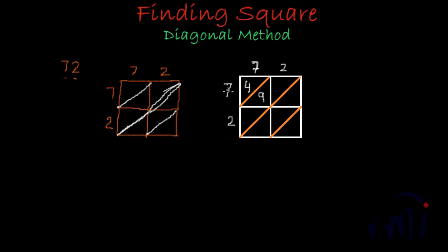Then we have seven times two is 14. 14 has four at units place and one at tens place. So the number at tens place I am writing above the diagonal and the number at units place I am writing below the diagonal.